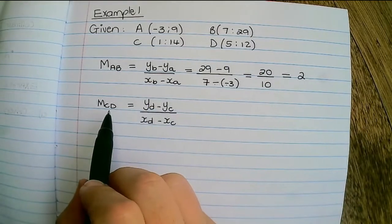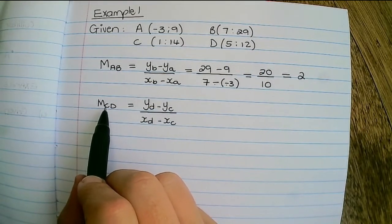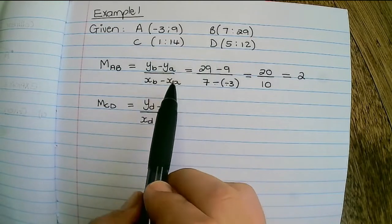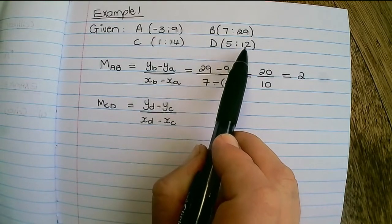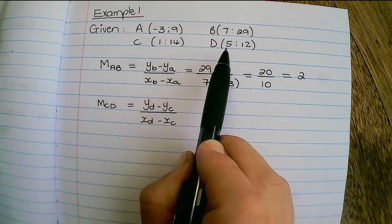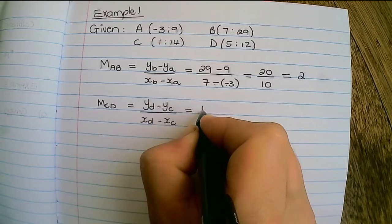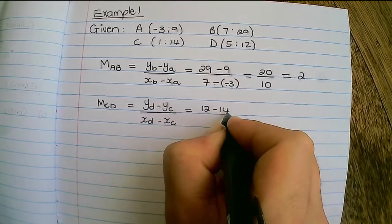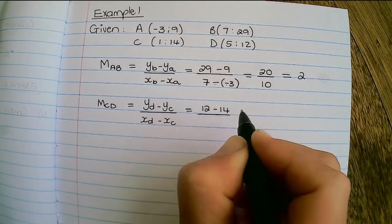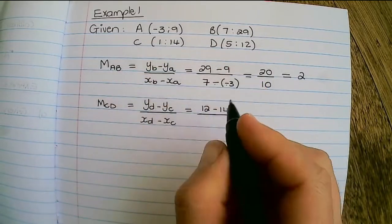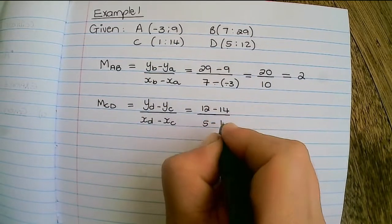Now similarly to find the gradient of the line CD, it is the difference in y values over the difference in x values. So that would be 12 minus 14 in the numerator and then 5 minus 1 in the denominator.